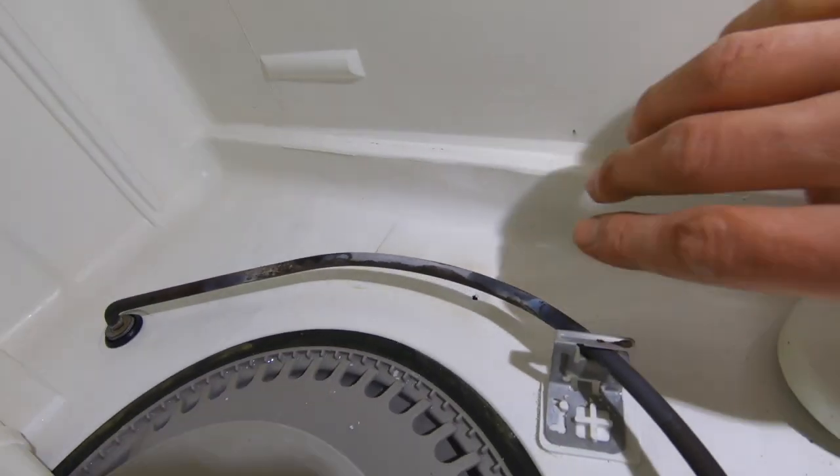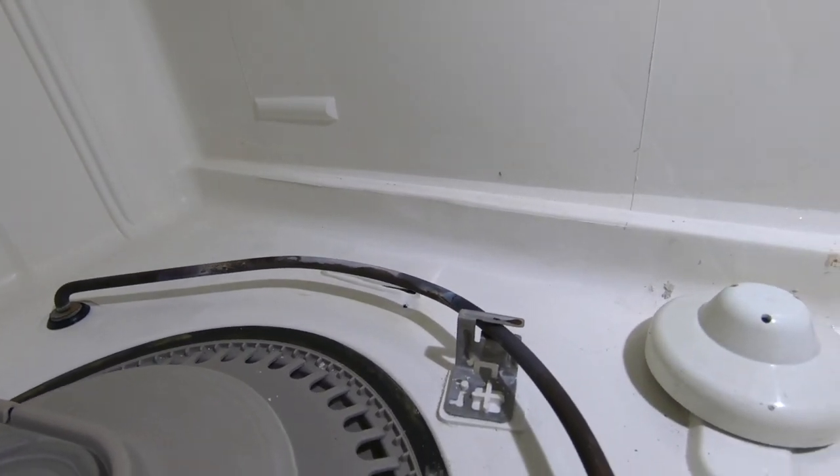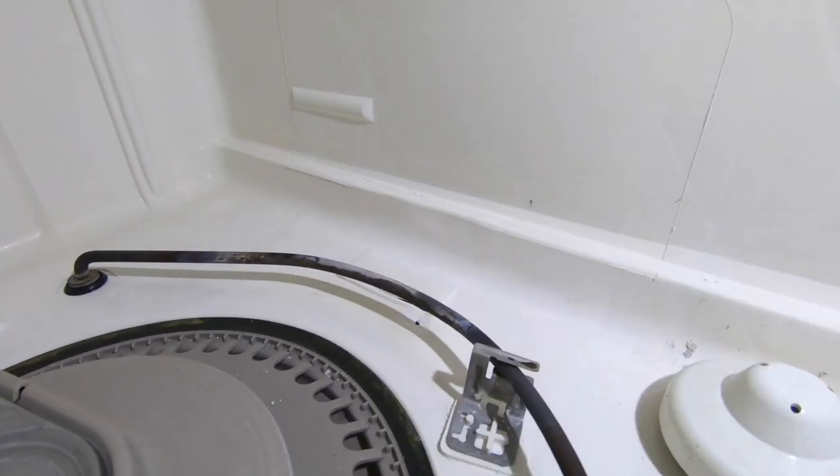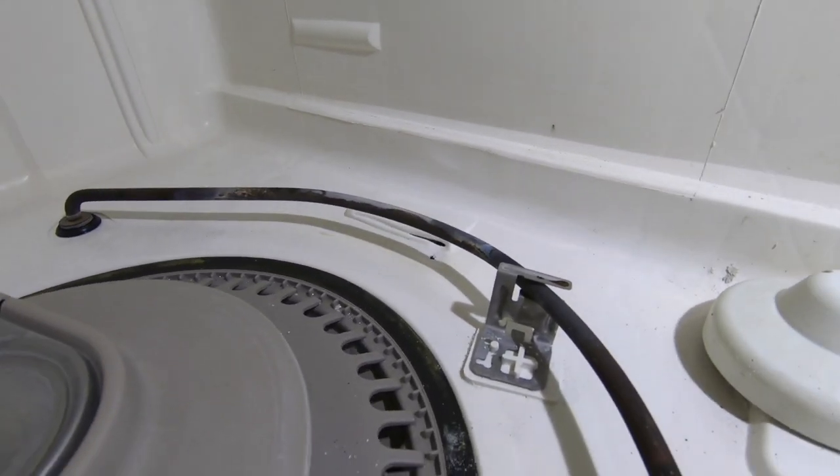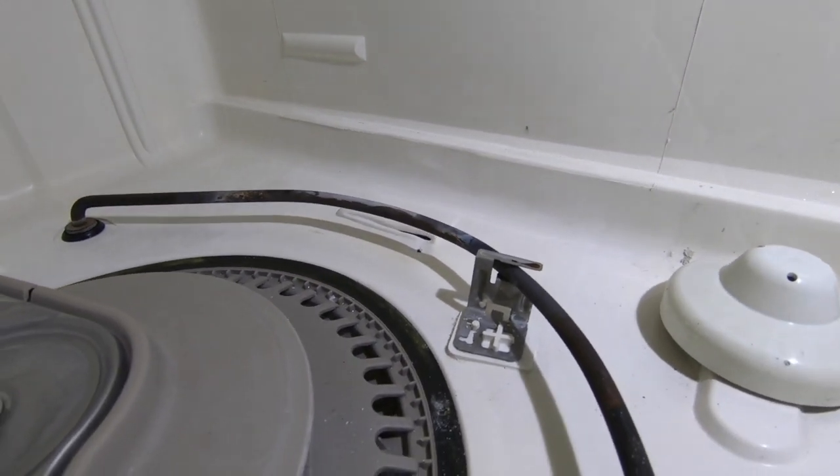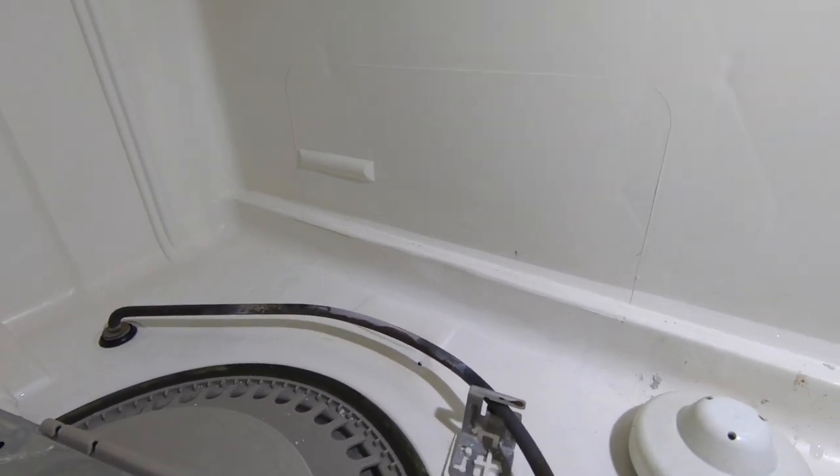We're gonna take the sensor that's off underneath and we're gonna apply some of this water weld to both the inside and the outside of the tub just to give us a better chance of it staying sealed.